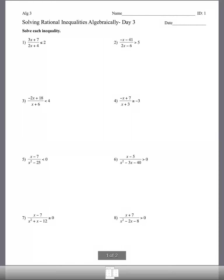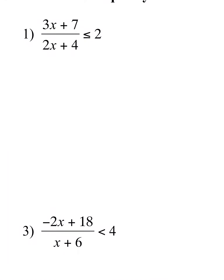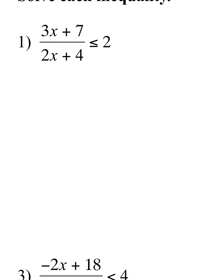Okay, here we go with the most interesting one. We started a little bit yesterday with these rational inequalities. Today one side is not zero, so we're going to have to make it that way. That's going to be our first step. Looking at number one, I'm going to subtract 2 from both sides, giving us (3x + 7)/(2x + 4) - 2 ≤ 0.